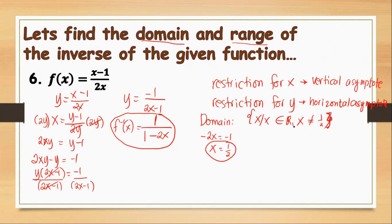Now, let's find the range. The range will be the restriction for y. As you can see, the degree of the numerator and the denominator is not equal — the numerator has less degree compared to the denominator. And so, the horizontal asymptote is y equals 0. Therefore, the range of the function must be y such that y is an element of real number, but y is not equal to 0.